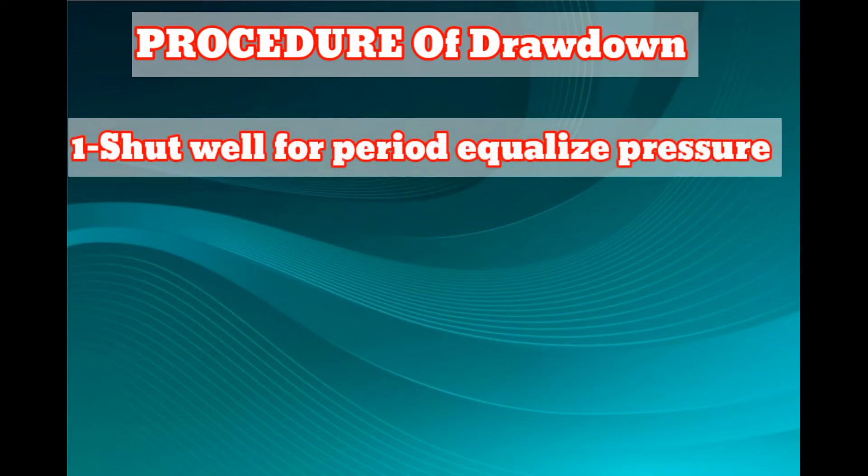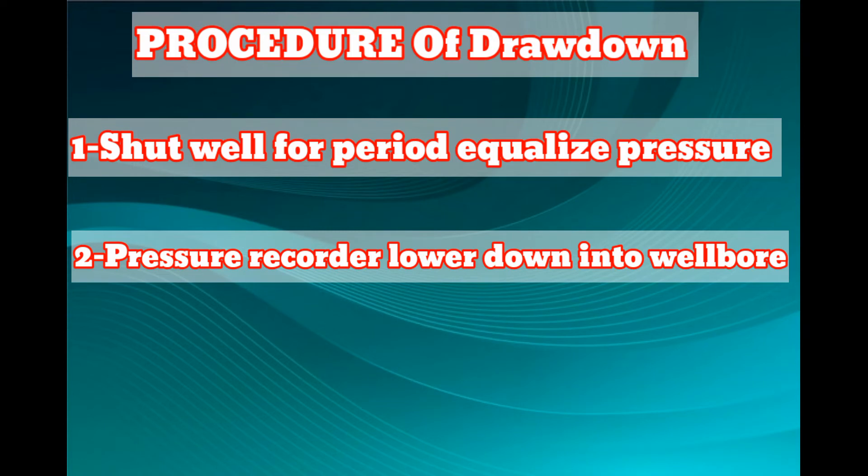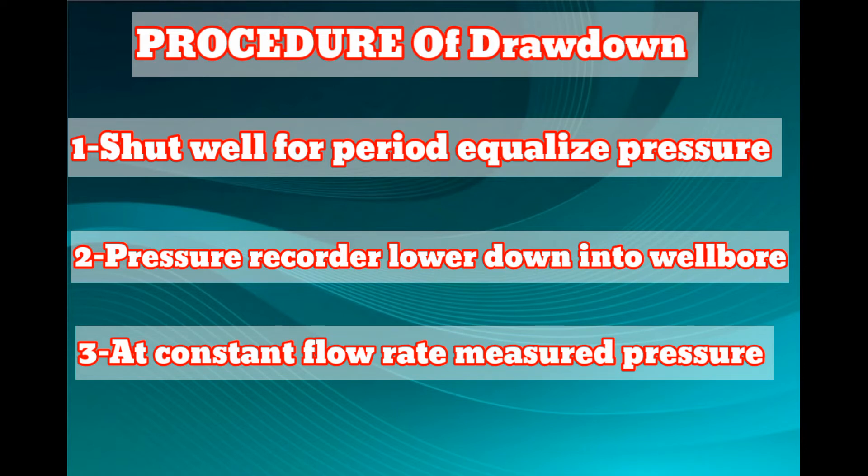What is the procedure of pressure drawdown? There are three major steps. Step one, shut the well for a period of time to equalize the pressure throughout the reservoir. Two, pressure equipment with electronic gauges is lowered into the well to measure pressure from bottom to top. Step three, when flow begins at constant rate, the bottom hole pressure is measured continuously.